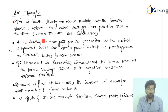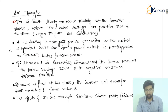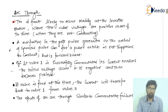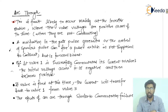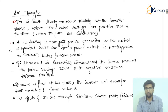A malfunction in the gate pulse generator, or the arrival of a spurious pulse, can fire a pulse to a valve which is not supposed to conduct. However, that valve is in a forward biased condition. So even though it is not supposed to conduct, because it is in the forward biased condition, it can be triggered into conduction.